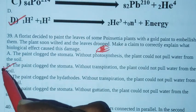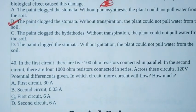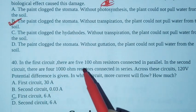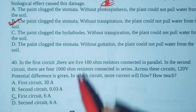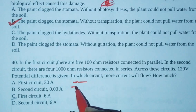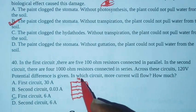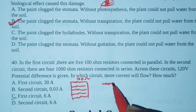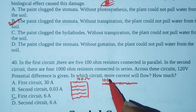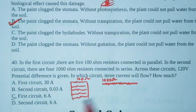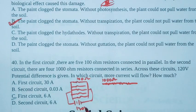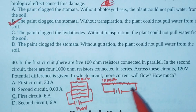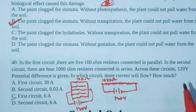Next 40th one. In the first circuit there are five 100 ohm resistors connected in parallel. So first circuit has five resistors, each resistor value is 100 ohm, connected in parallel. In the second circuit there are four 1000 ohm resistors connected in series.